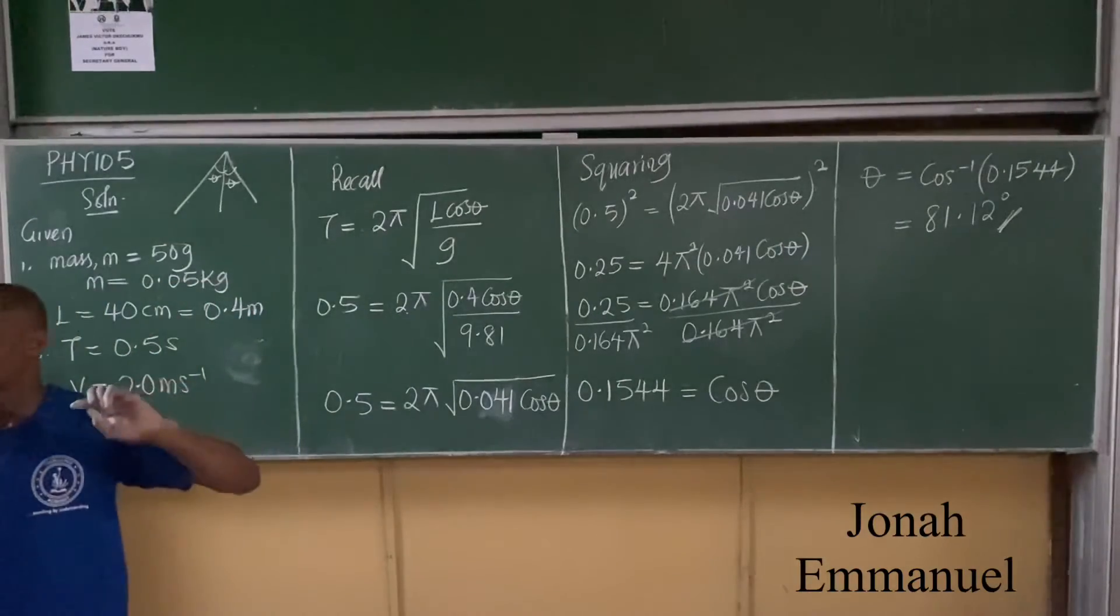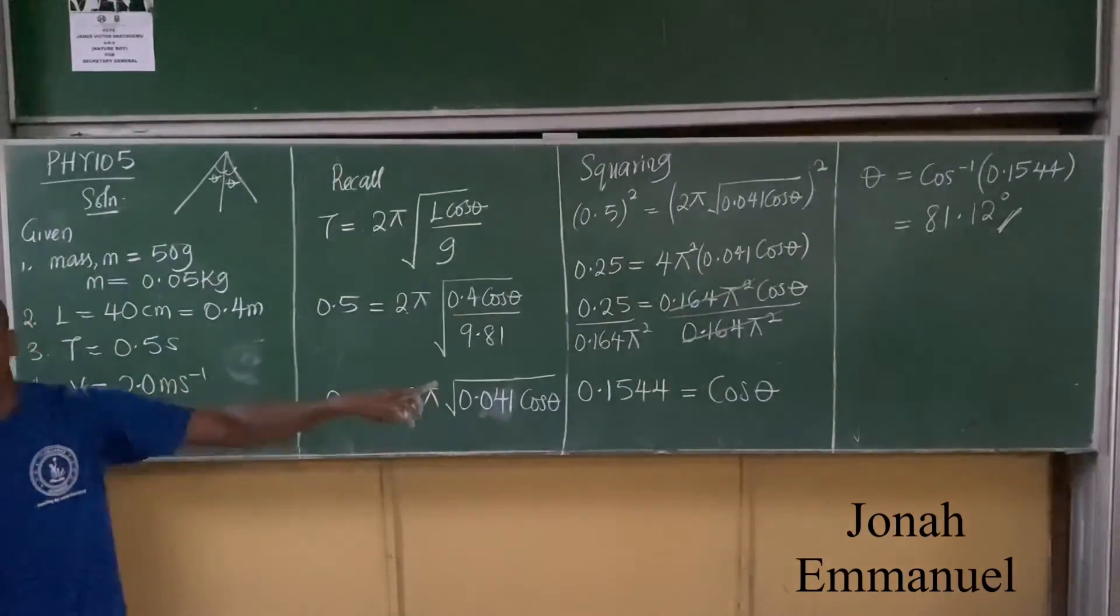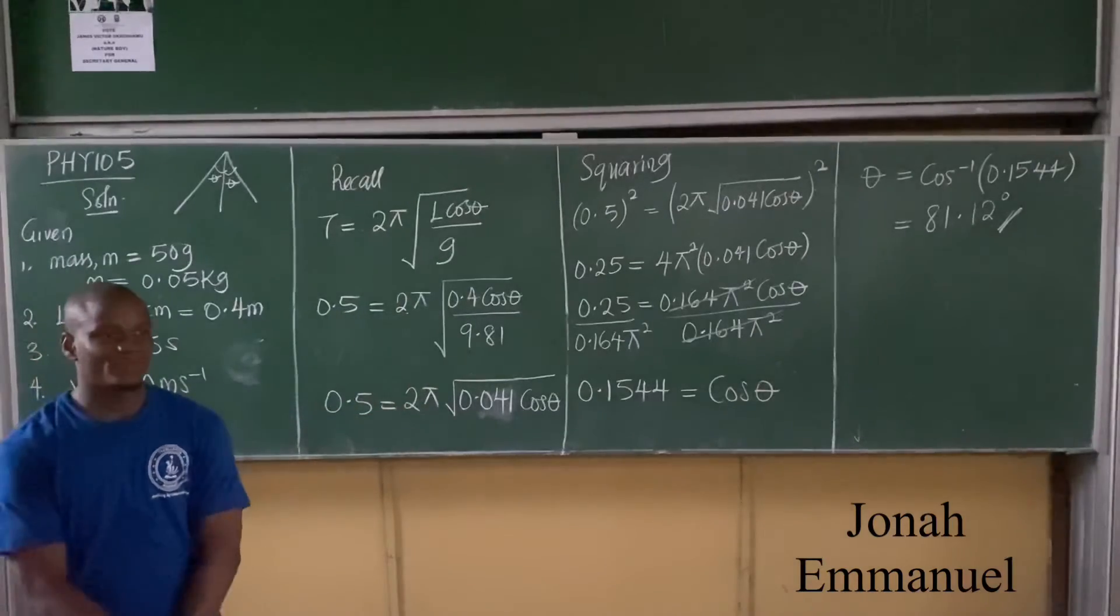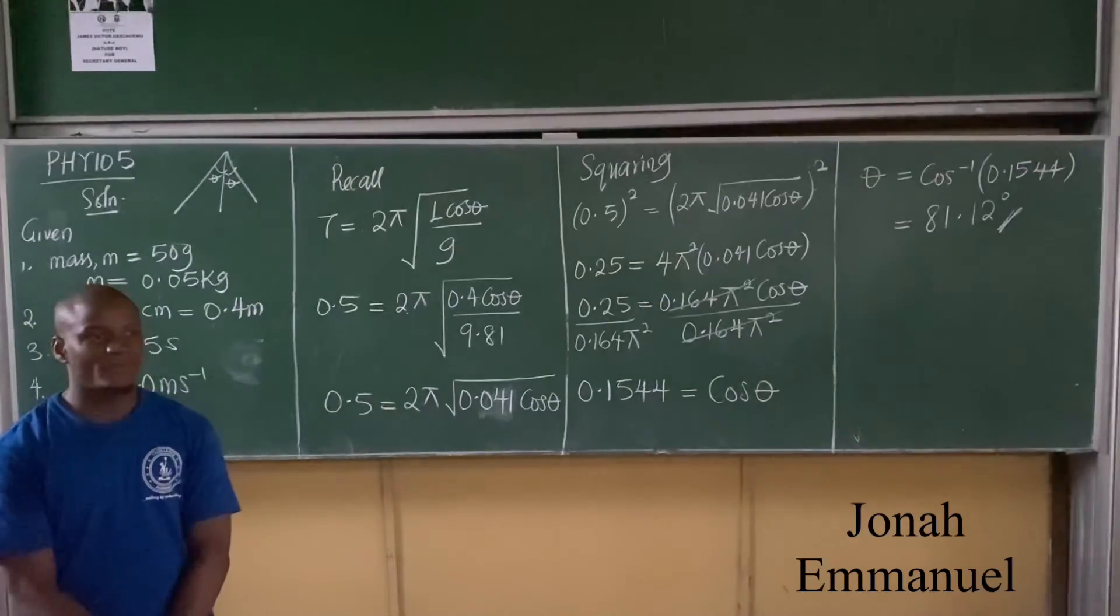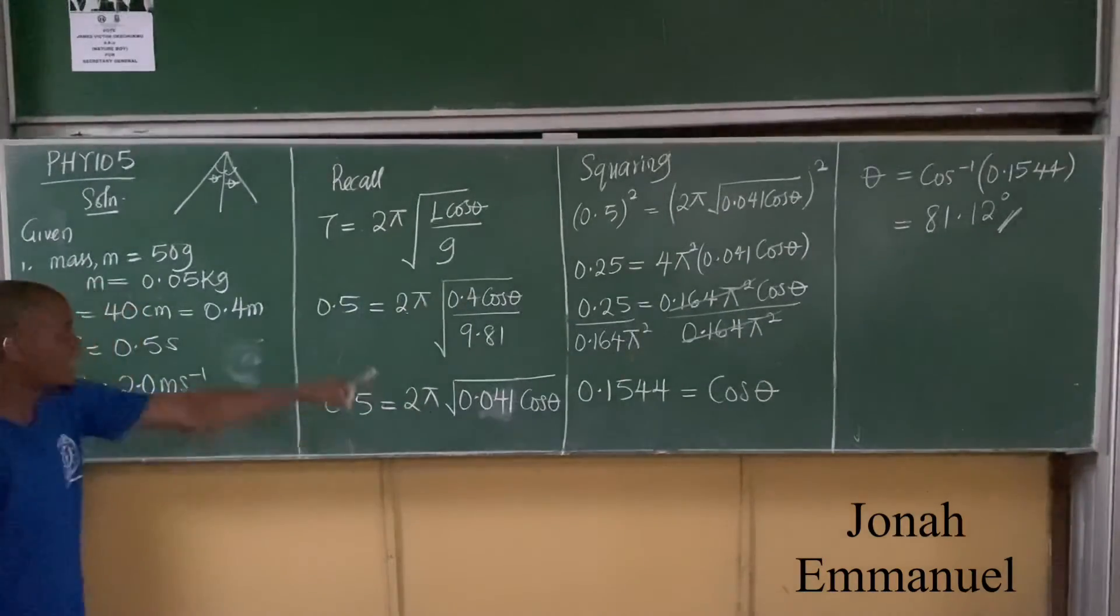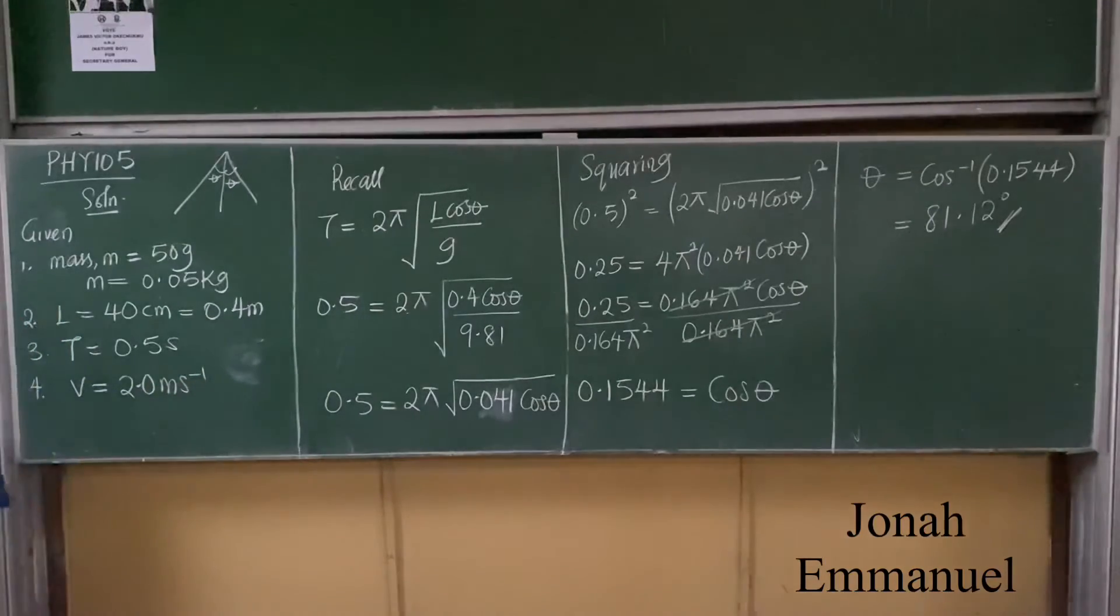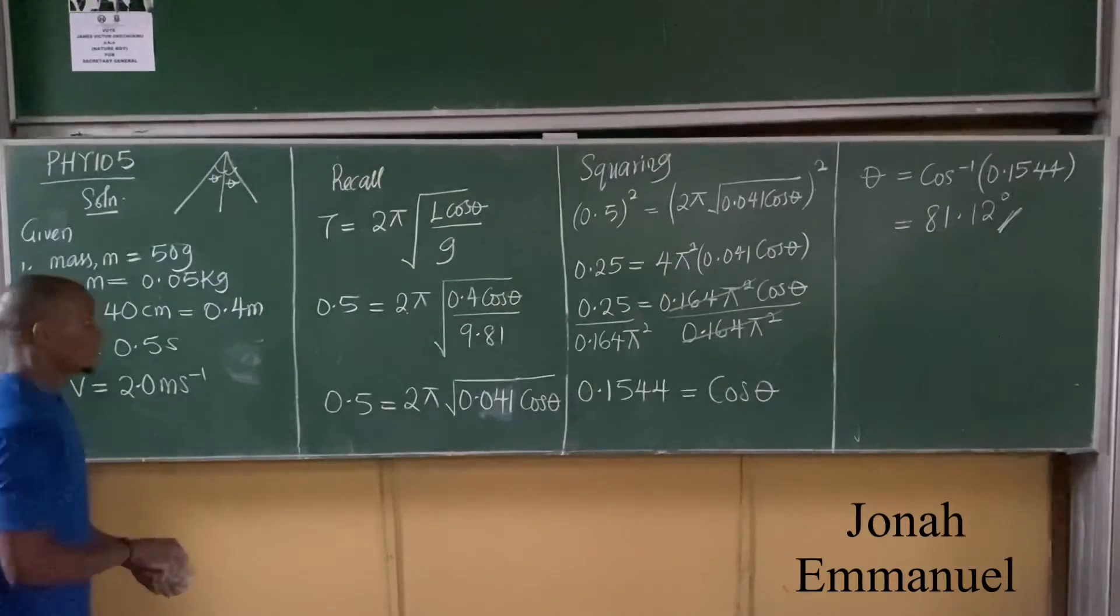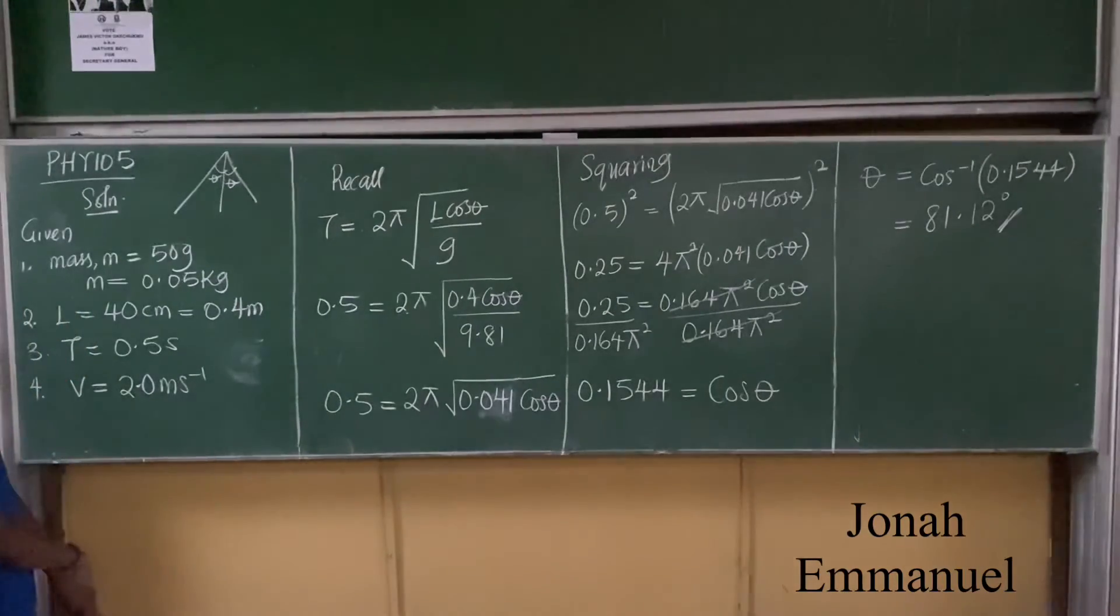What if you are asked to find angular velocity here? What would you do? Angular velocity. They say find angular velocity here, what would you do? V equals ωR. So what's V? What's omega? What's R? R is radius.